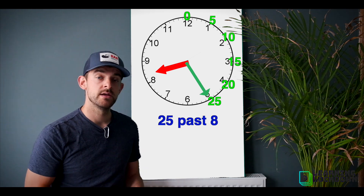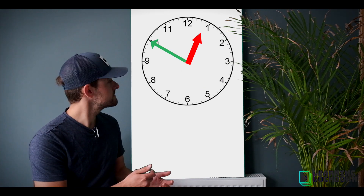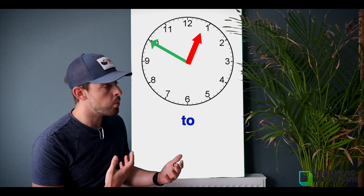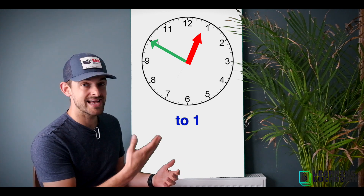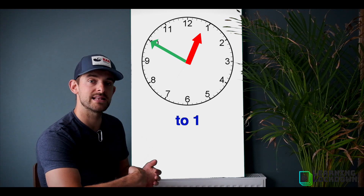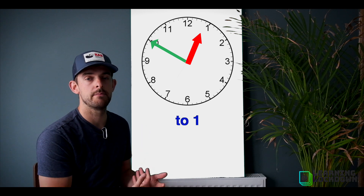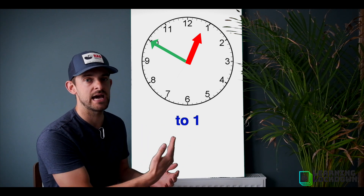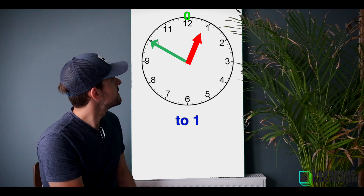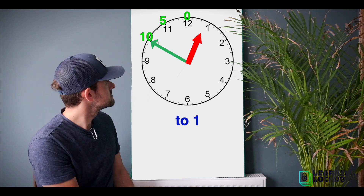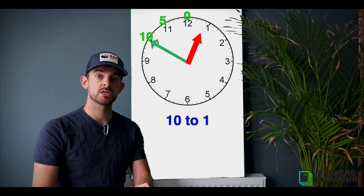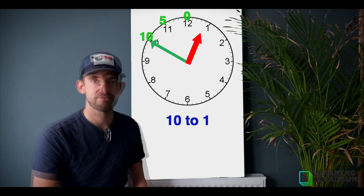Count round clockwise for past times starting at zero: 0, 5, 10, 15, or quarter past, 20, 25 — twenty-five past eight. For a 'to' time, the minute hand is in the 'to' half, going towards one. We count anti-clockwise, looking at how much of the journey is left until the minute hand finishes the hour at twelve. Starting at twelve, count anti-clockwise: 0, 5, 10 — so it is ten to one. Off you go for level one.